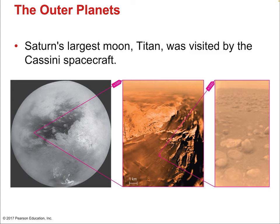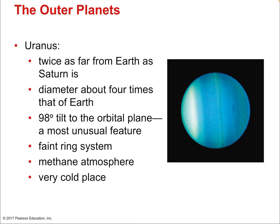Saturn's largest moon is Titan — an appropriate name for a very large moon comparable in size to Jupiter's four large moons. Titan is quite remarkable because it has an atmosphere, clouds, and flowing liquid on its surface. But the rain isn't water — the rain is methane, at much colder temperatures than Earth's atmosphere.